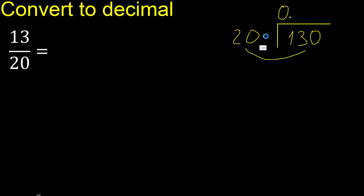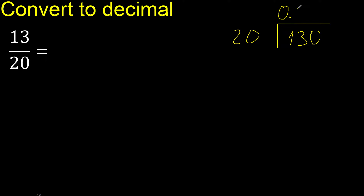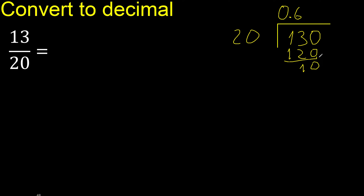130 is not less than 20. Multiply by which number is nearest to 130 but not greater — multiply by 7 is greater. Multiply by 6 is 120; subtract, remainder is 10.